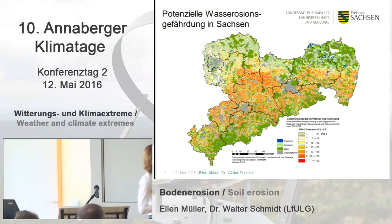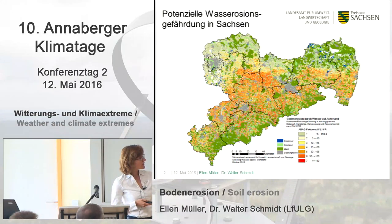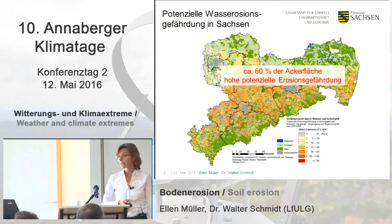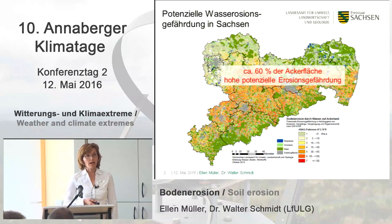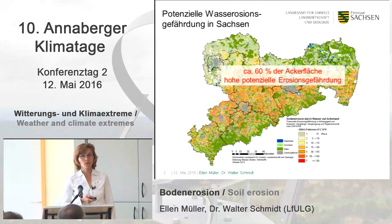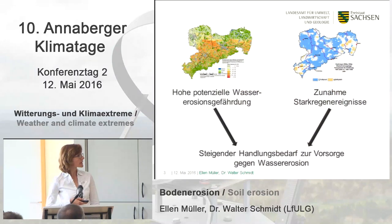On this map you can see Saxony and its potential erosion risk. Where it is more red, the risk is higher. Because of the less stable soil in the middle area and also in the foreland of the mountains, there is a higher risk for erosion. About 60% of the fields in Saxony have a potential erosion risk, and erosion events are currently taking place. When there is a long dry period followed by heavy precipitation, erosion can occur — especially in May and June, and again in August and September.